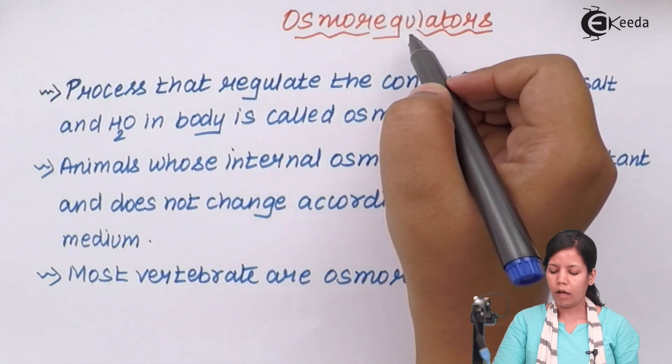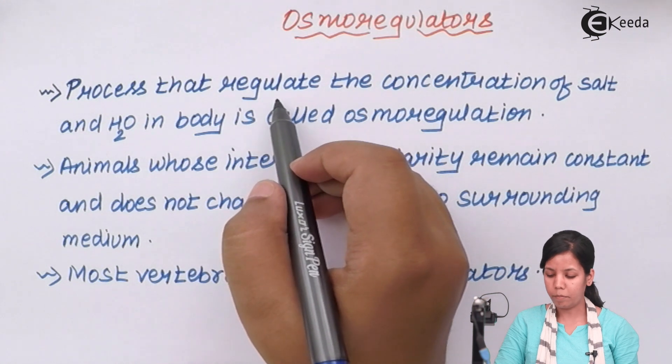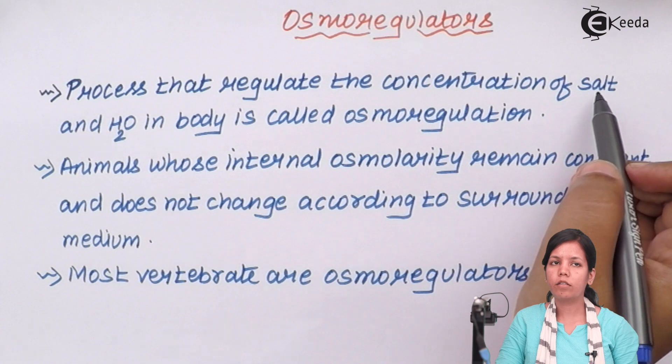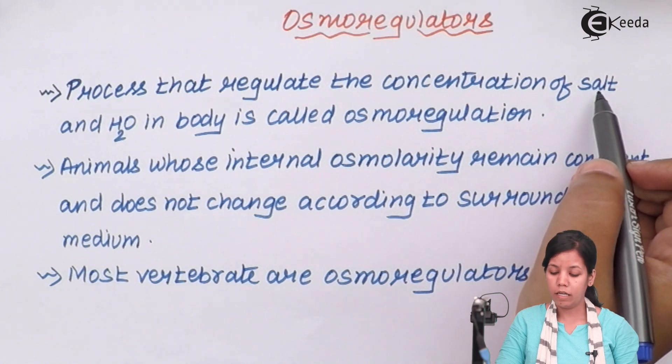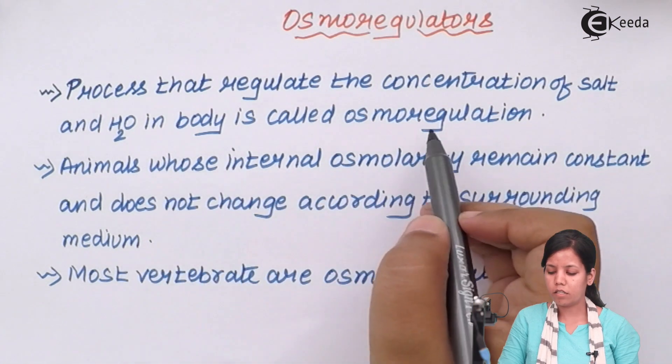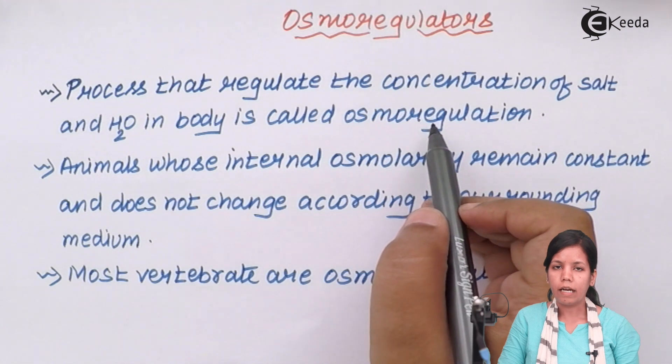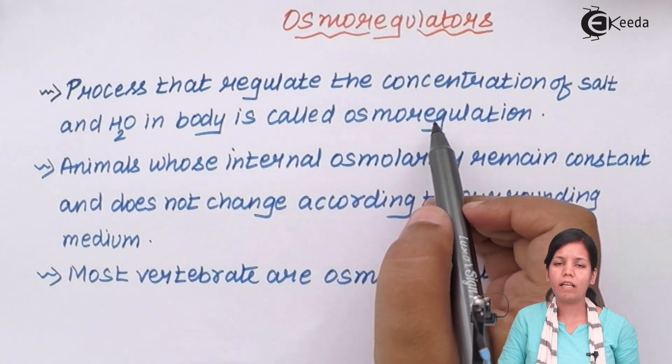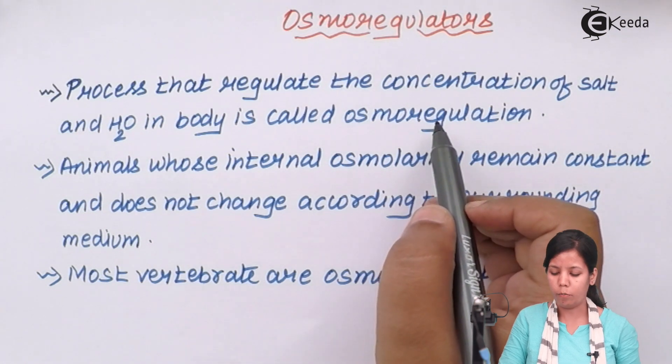Osmoregulators - now the process that helps to keep in check or in balance or regulate the concentration of salts like sodium, potassium and water in your body is termed as osmoregulation. Now dehydration could be said as the deficiency or the presence of water in your body. And osmoregulation is just trying to maintain that water and salt concentration in your body.